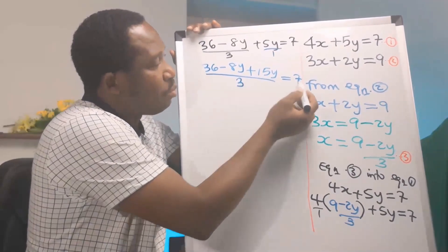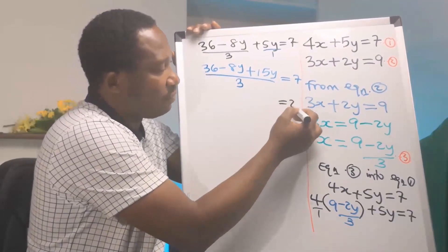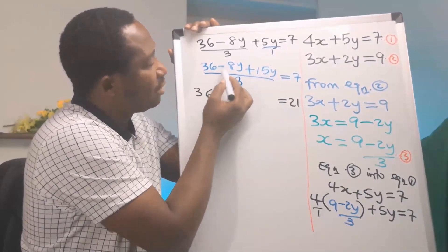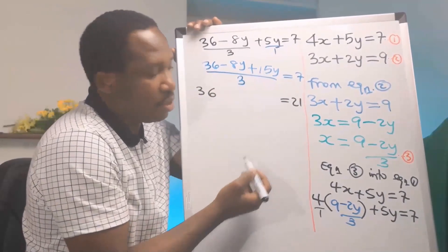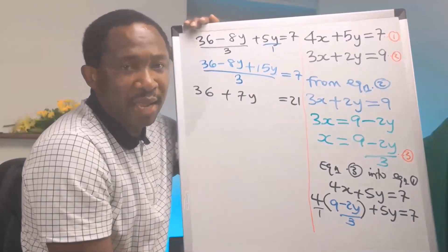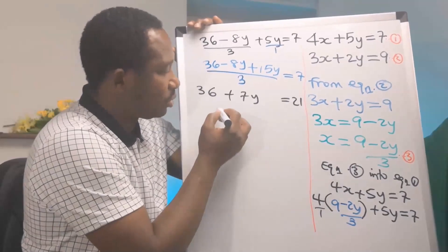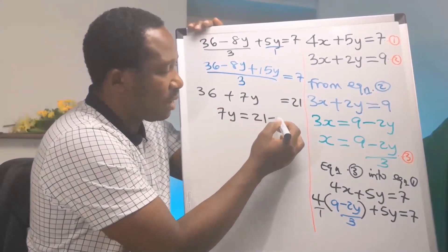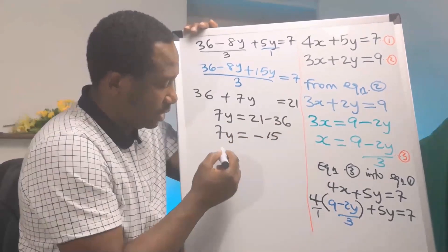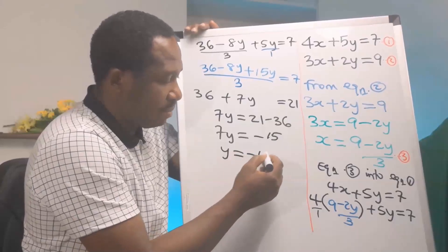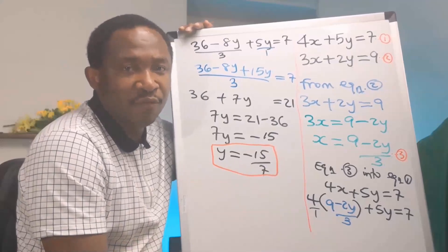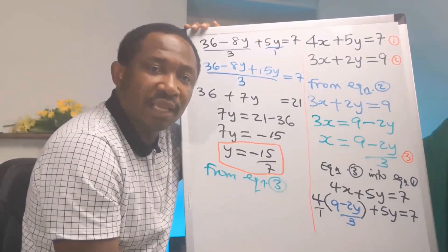On the right-hand side, 3 multiplies 7 to give 21. On the left side we have 36 minus 8y plus 15y, which gives plus 7y. Our aim is to make y the subject, so 7y = 21 minus 36, which gives 7y = minus 15, and therefore y = −15/7.